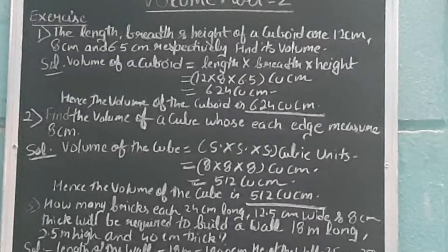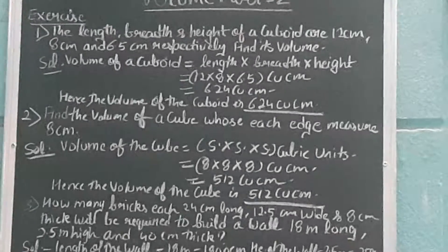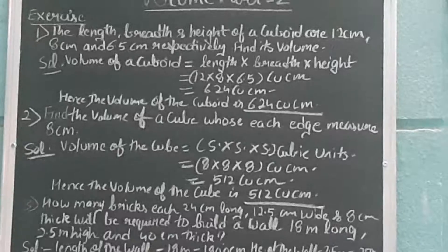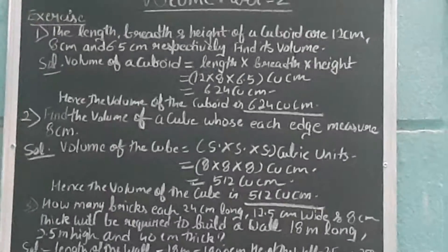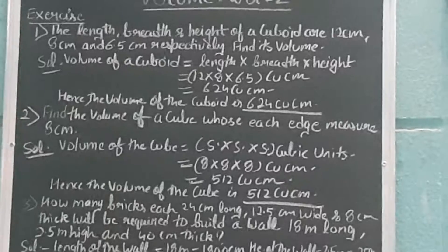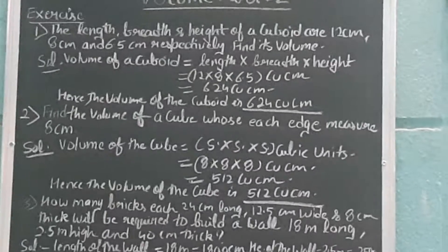Hence the volume of the cuboid is 624 cubic centimeters. Then the second question says: find the volume of a cube whose each edge measures 8 cm. As I have explained earlier, all its sides are equal.